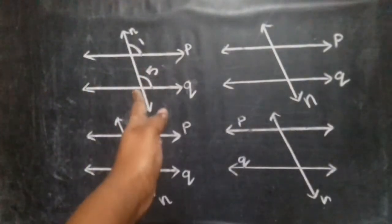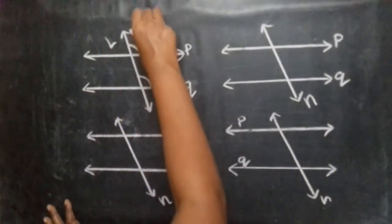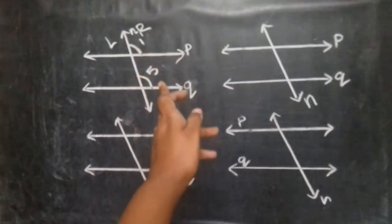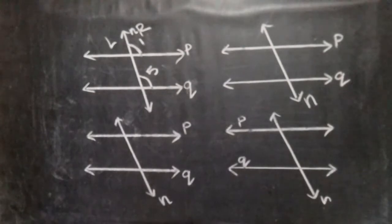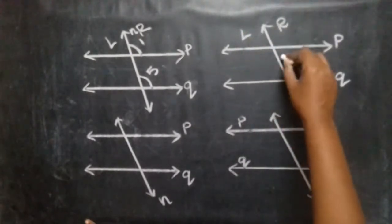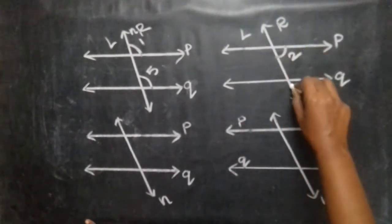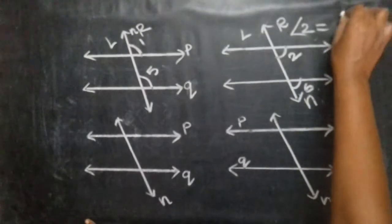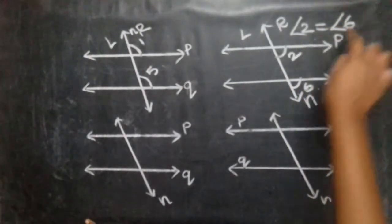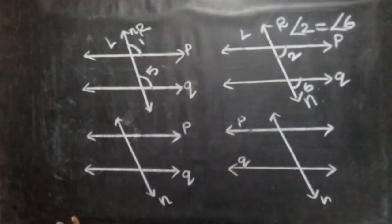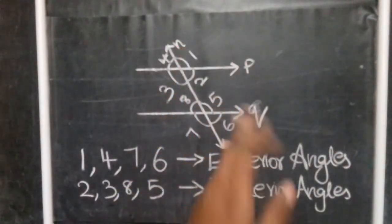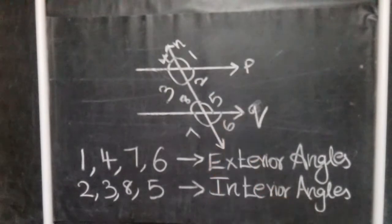On the transversal line, on the left and right sides, on the same side, angle 1 and angle 5 are corresponding angles — this is the first pair. Angle 1 is equal to angle 5. Similarly, angle 2 and angle 6 are corresponding angles — this is the second pair. Angle 2 is equal to angle 6.